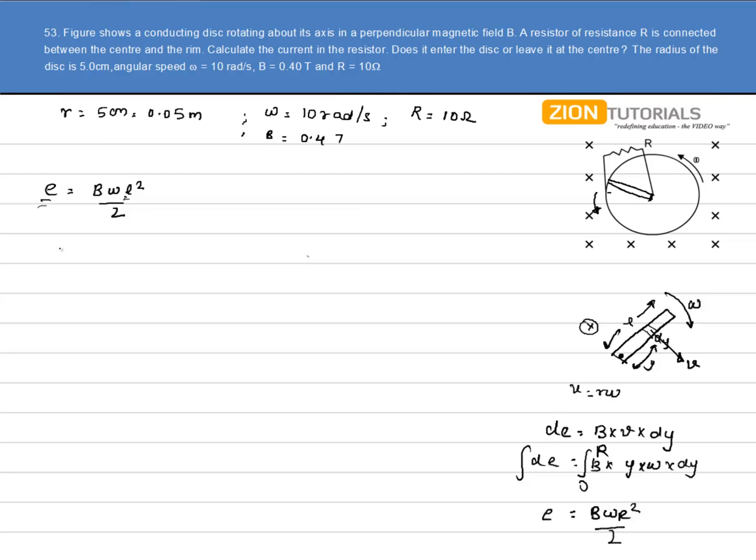Simply substituting all the values, I have magnetic field as 0.4, omega as 10, length that is equal to radius given by 0.05 whole square divided by 2. This is the EMF that is generated.